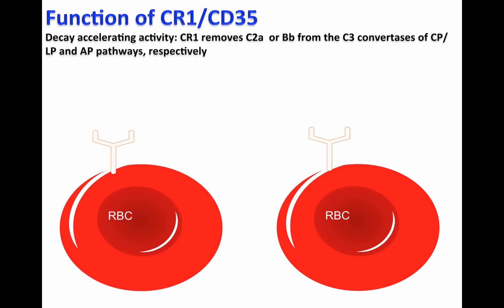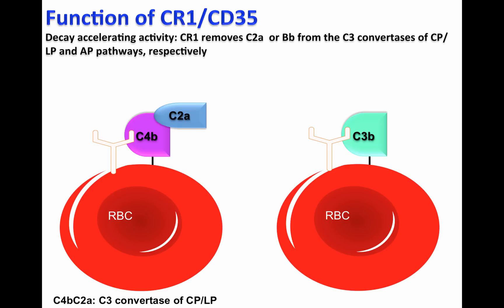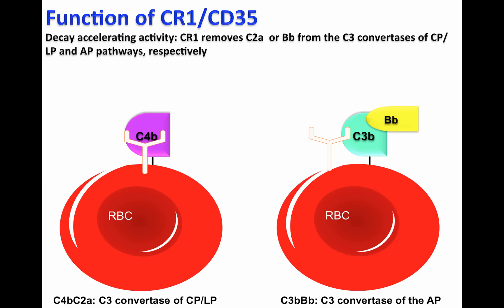CR1 also has decay accelerating activity. If C4b and C3b are deposited on red blood cells, this may form the C3 convertase of the classical or lectin pathway, C4b-C2a, or the C3 convertase of the alternative pathway, C3b-Bb. If this happens, CR1 will recognize the C3 convertase and remove C2a or Bb from their respective C3 convertase, meaning CR1 is accelerating the decay of the C3 convertase.